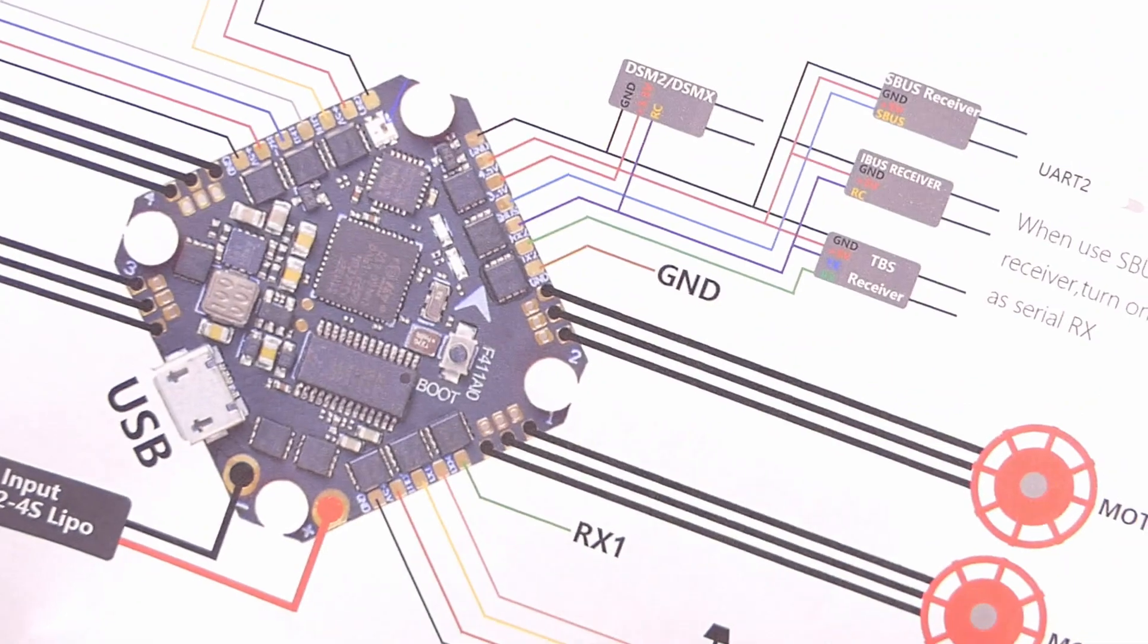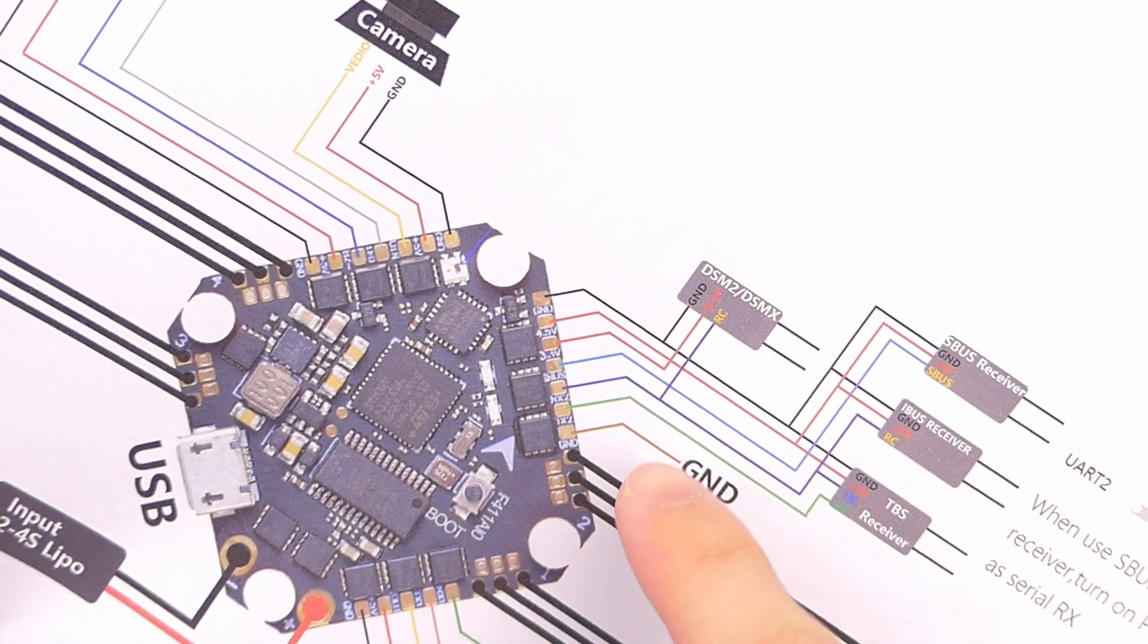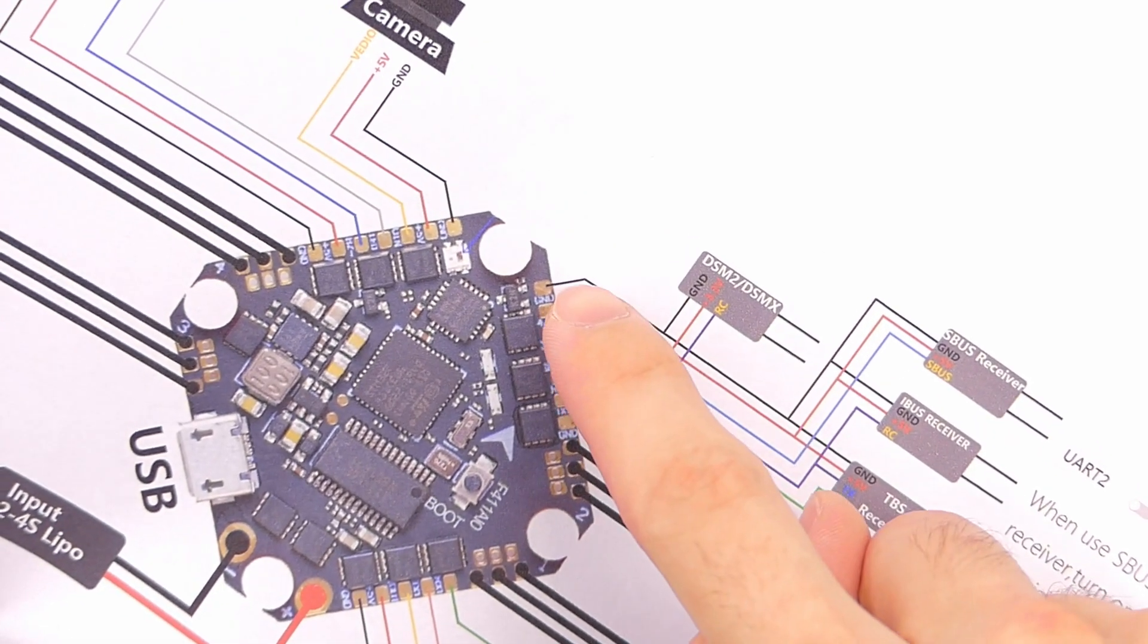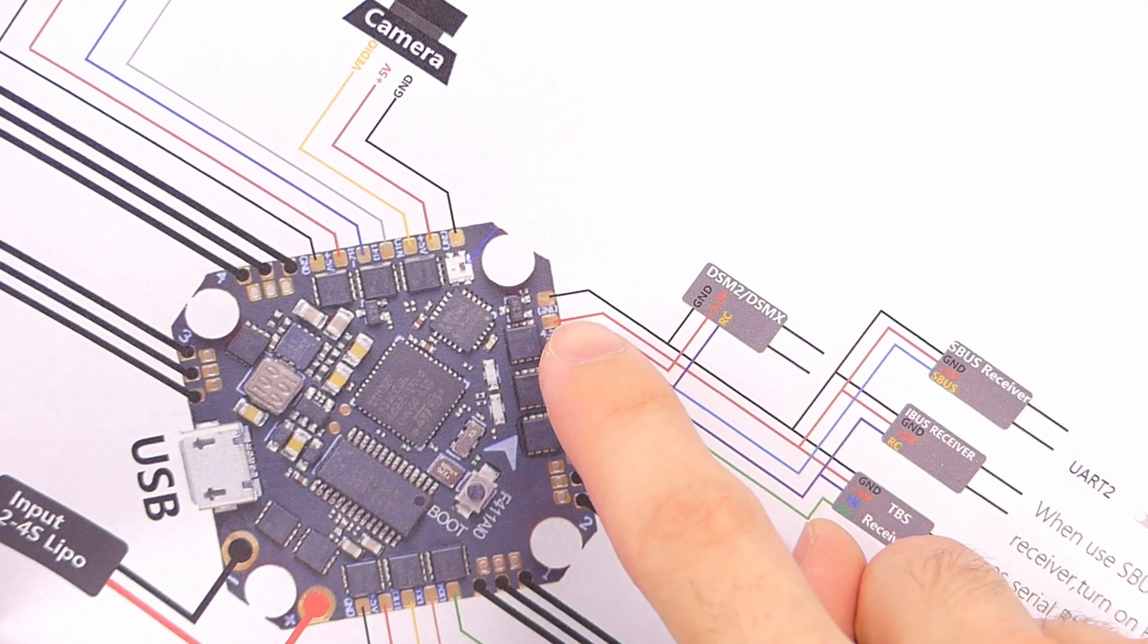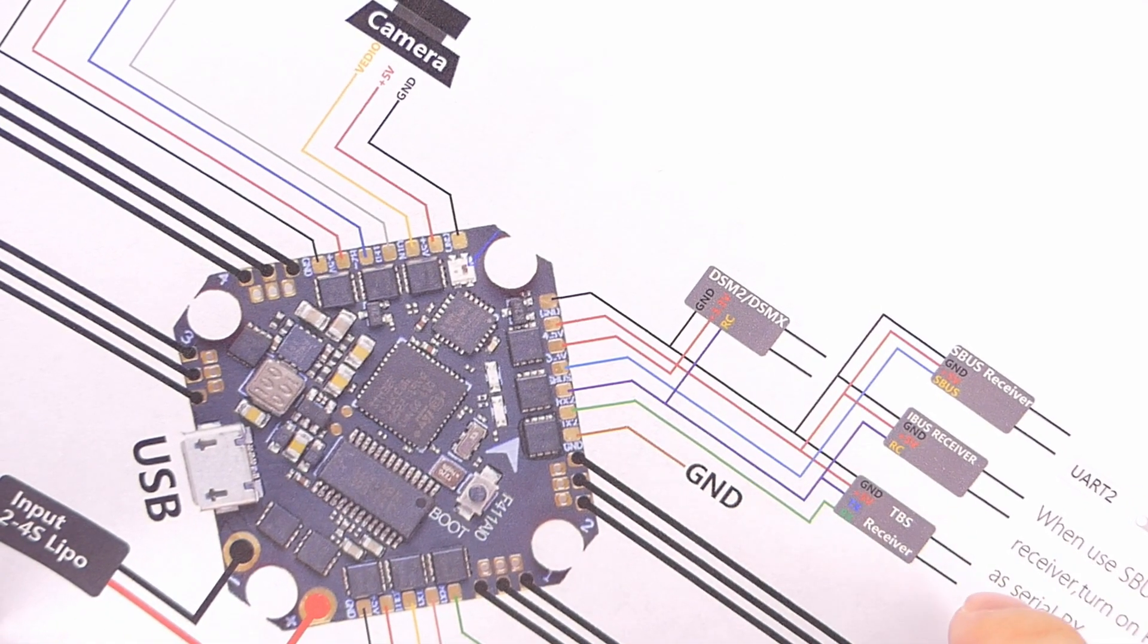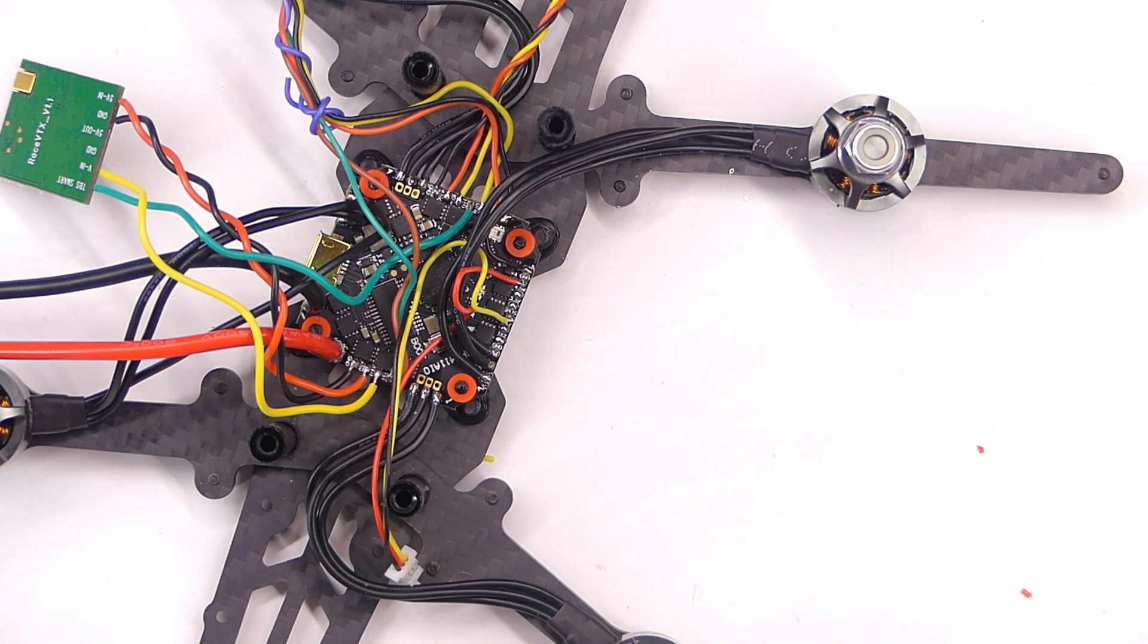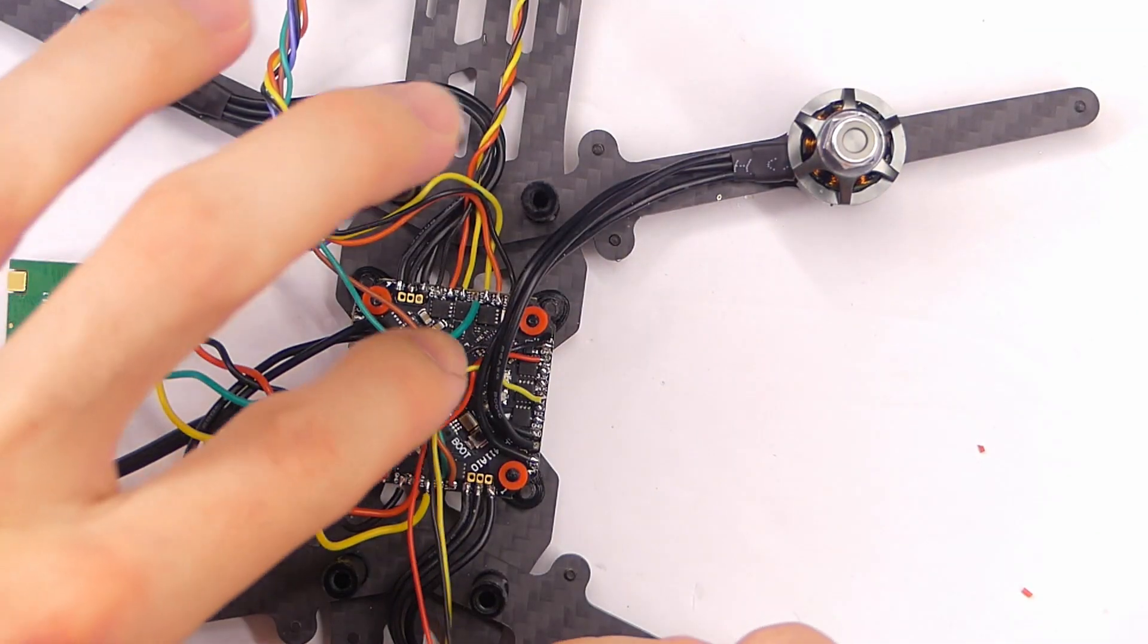So for our receiver, we want to do the top one, the second from the top, and then the fourth from the top. So one, two, three, four, five. The fifth one from the top, or the third from the bottom, or however you want to look at that. And that should do it. That's going to be RX2, which should be the proper one for our iBus receiver.